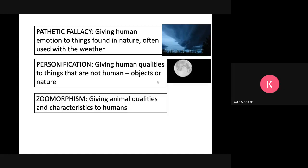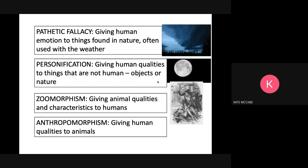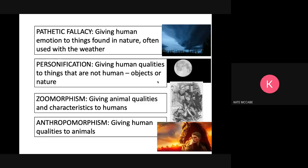We have zoomorphism, which is giving animal qualities and characteristics to humans. So in a text you're going to read in Year 10, Jekyll and Hyde, we talk about Hyde's ape-like fury, where he's given the qualities of an ape. And finally we have anthropomorphism, which is giving human qualities to animals. Anyone who has read War Horse or seen The Lion King will know that those animals are given human qualities.